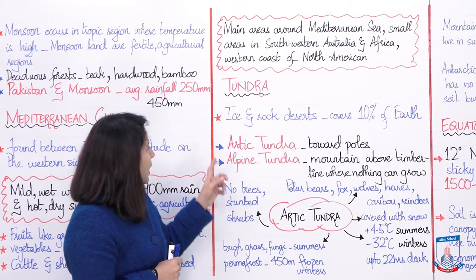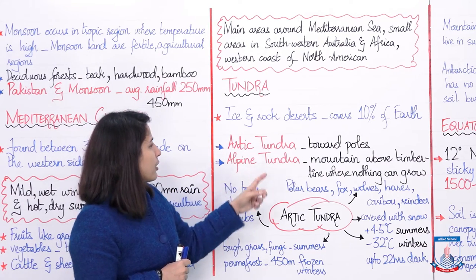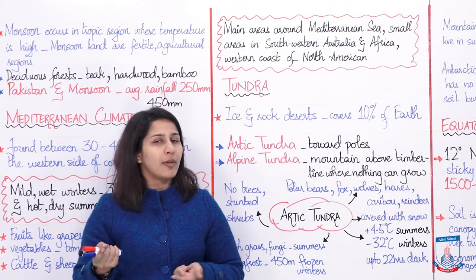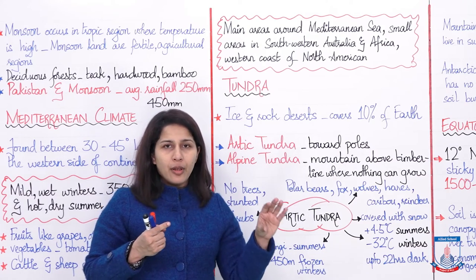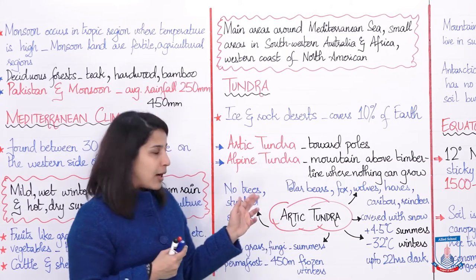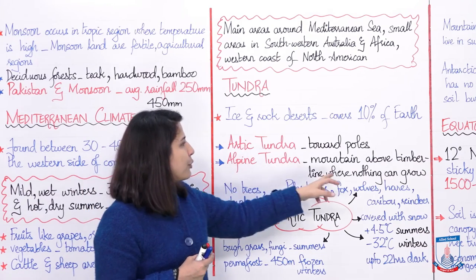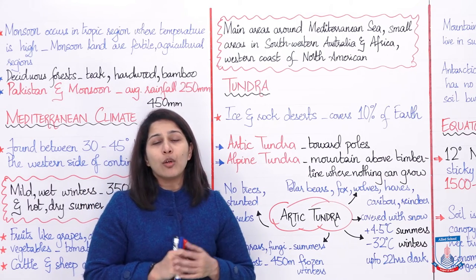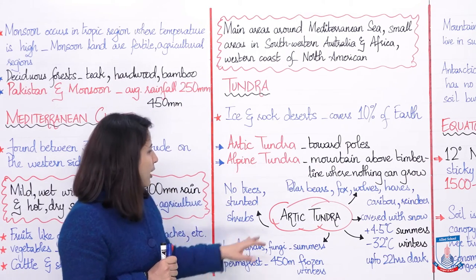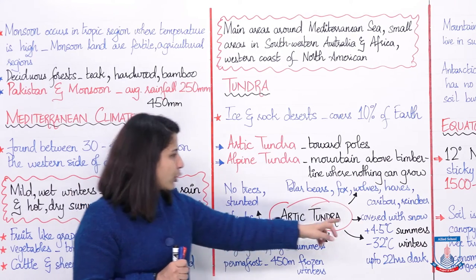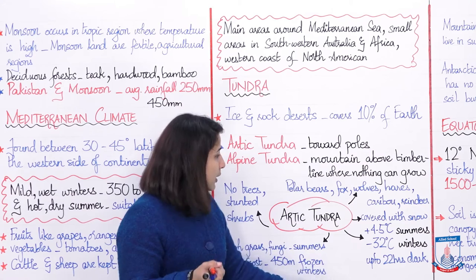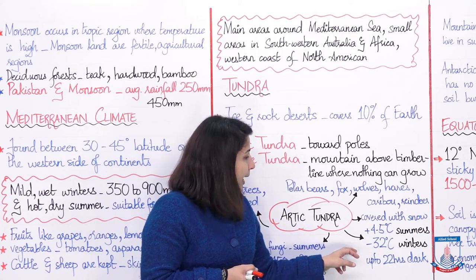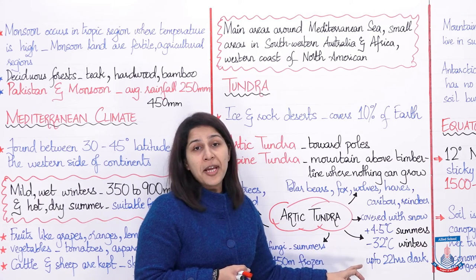There are two types of tundra: arctic tundra and alpine tundra. Arctic tundra is found towards the poles — North Pole and South Pole — where there is ice and snow. Alpine tundra is mountain above the timberline, where nothing can grow. Arctic tundra is always covered with snow. Summers have a temperature of plus 4 to 5 degrees Celsius and winters have a temperature of negative 32 degrees.